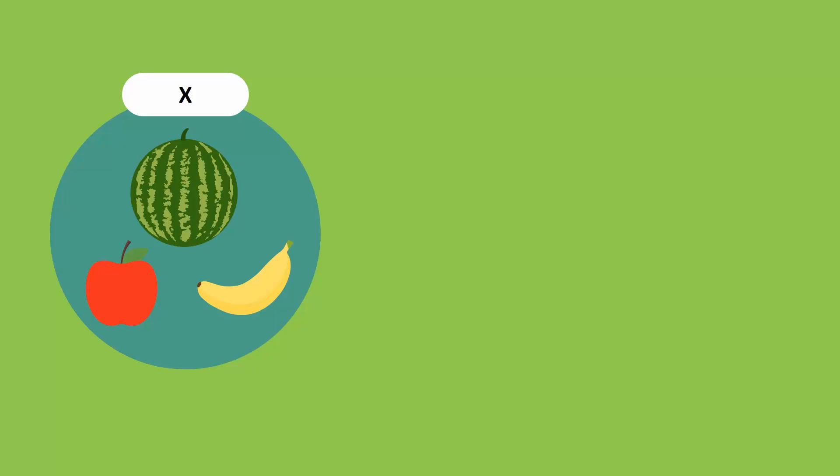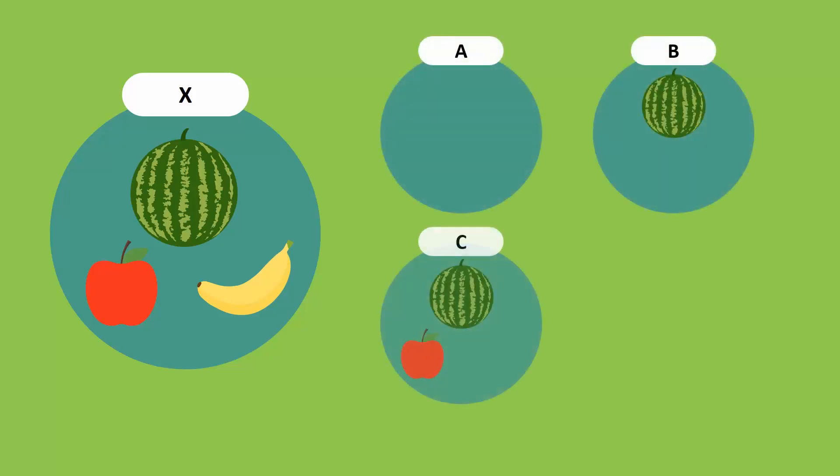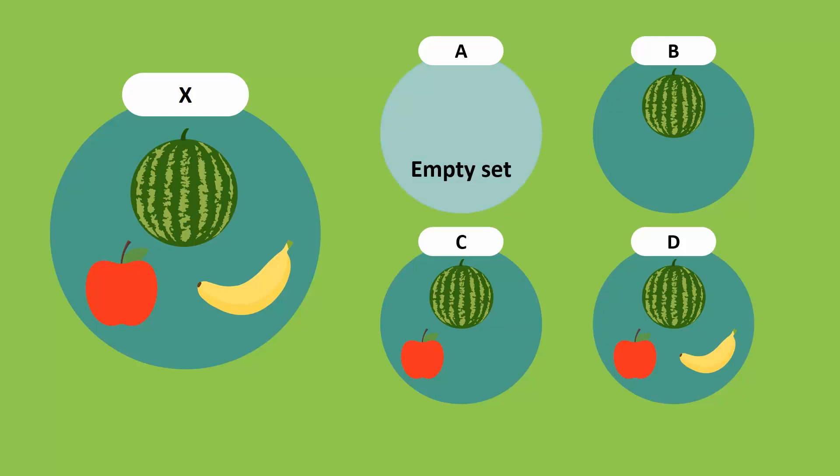Let us list four possible subsets and label them A to D. Subset A has zero elements. As this is an empty set, it is a subset of every set. Subset B has one element. Such sets are called singleton sets. Subset C has two elements and subset D has all three elements.